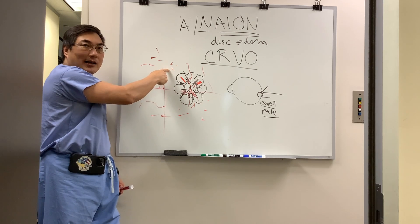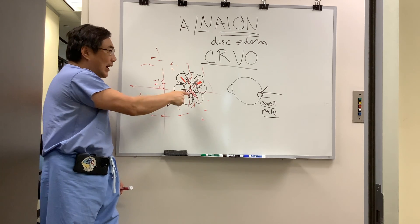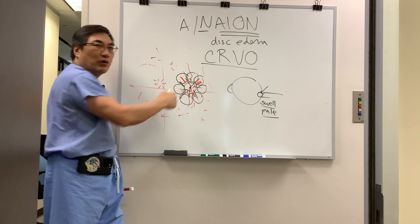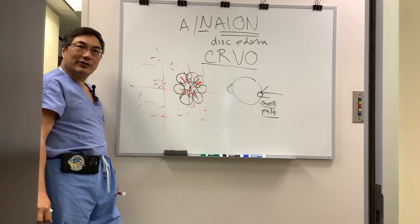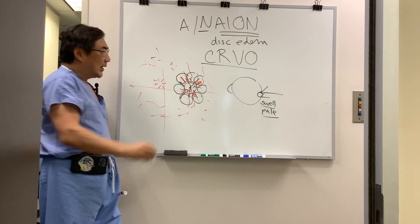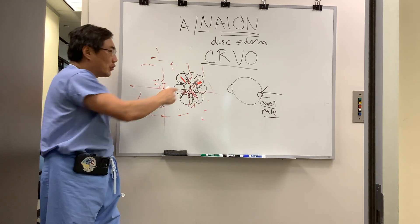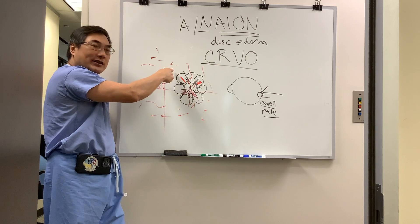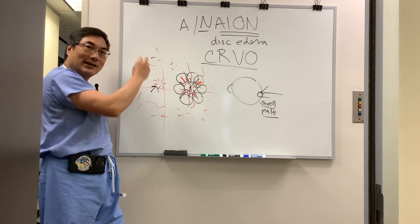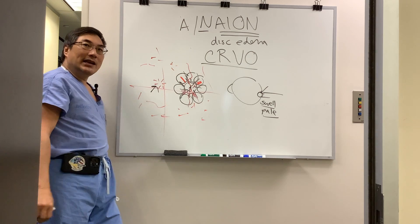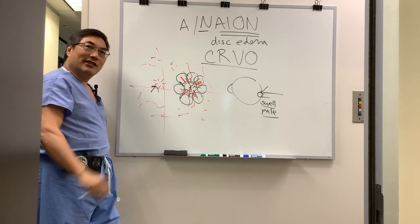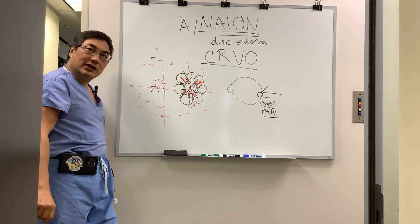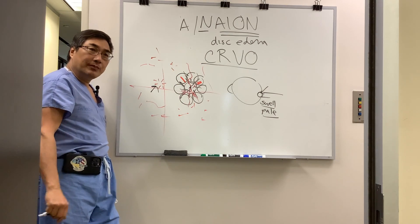Once we see the hemorrhage beyond that point, I'm going to be looking for venous dilation beyond one disc diameter of the disc. If we see venous dilation, tortuosity, hemorrhage beyond one disc diameter, and macular edema — even though that can occur in NAION — I'm going to favor incomplete central retinal vein occlusion.